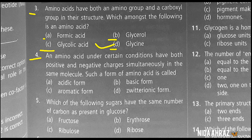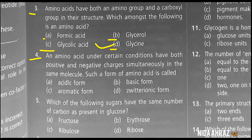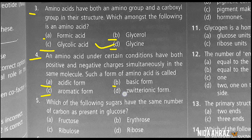An amino acid under certain conditions can have both positive and negative charges simultaneously in the same molecule. Such a form of amino acid is called: acetic form, basic form, aromatic form, or zwitterionic form. The correct choice is option D — zwitterionic form.